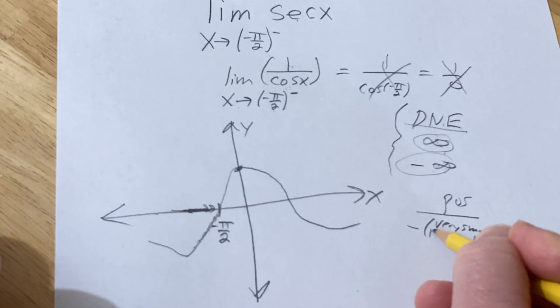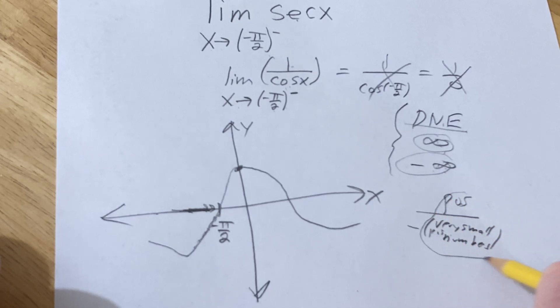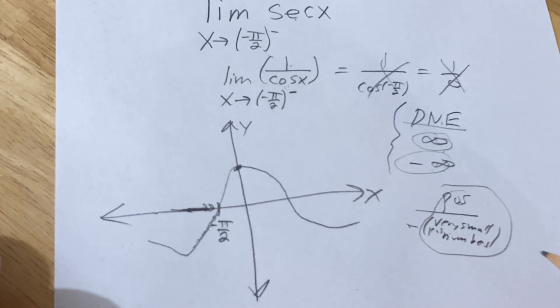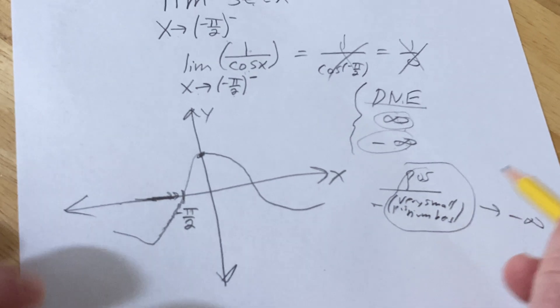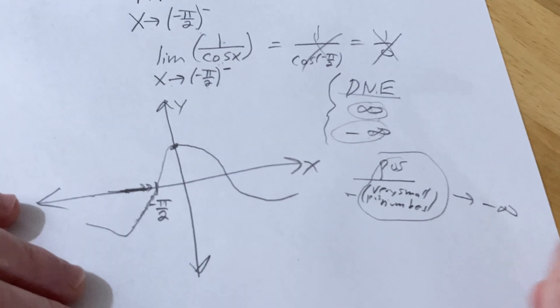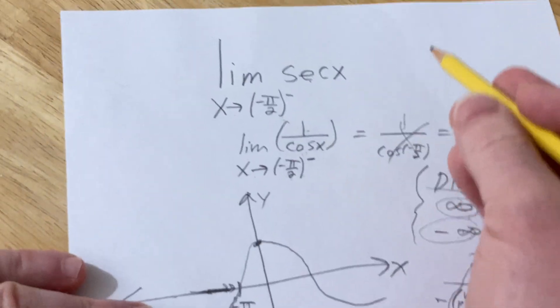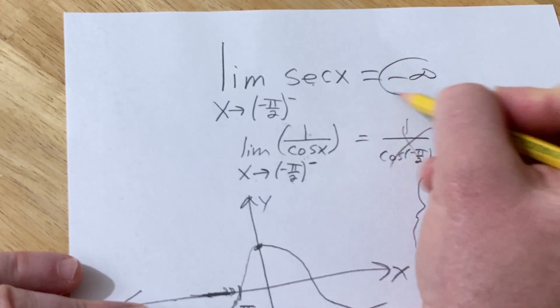Very small positive numbers in the denominator. When you have a positive number divided by very small positive numbers, you have a very big number. But there's a negative here, so this is going to be negative infinity because you're getting something really big but it's negative. So the answer is negative infinity.